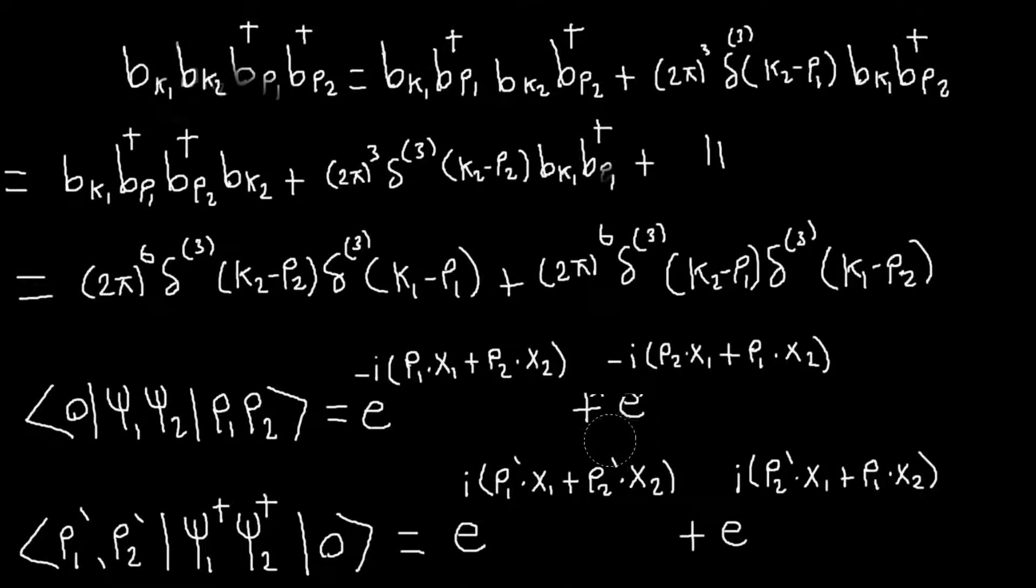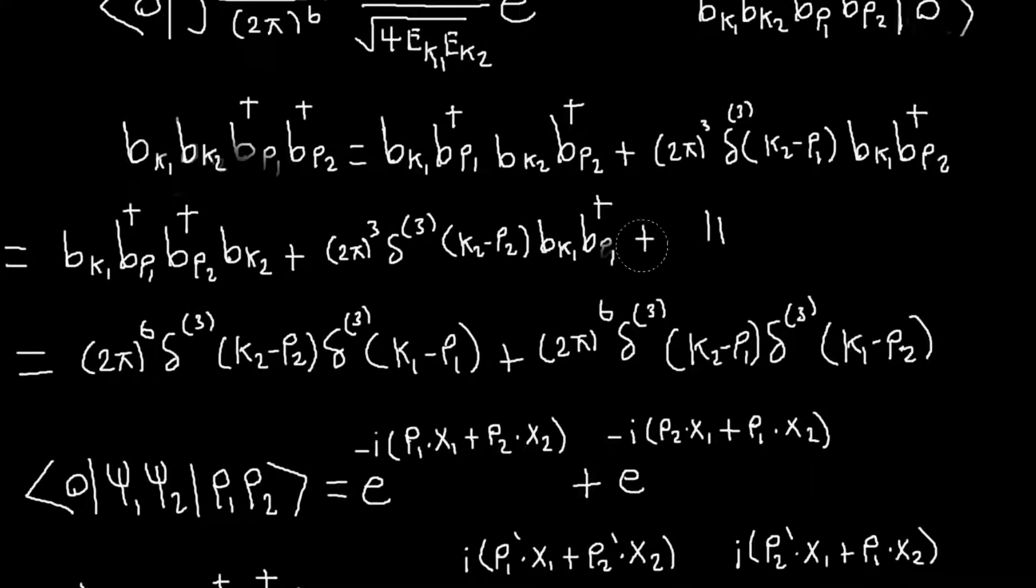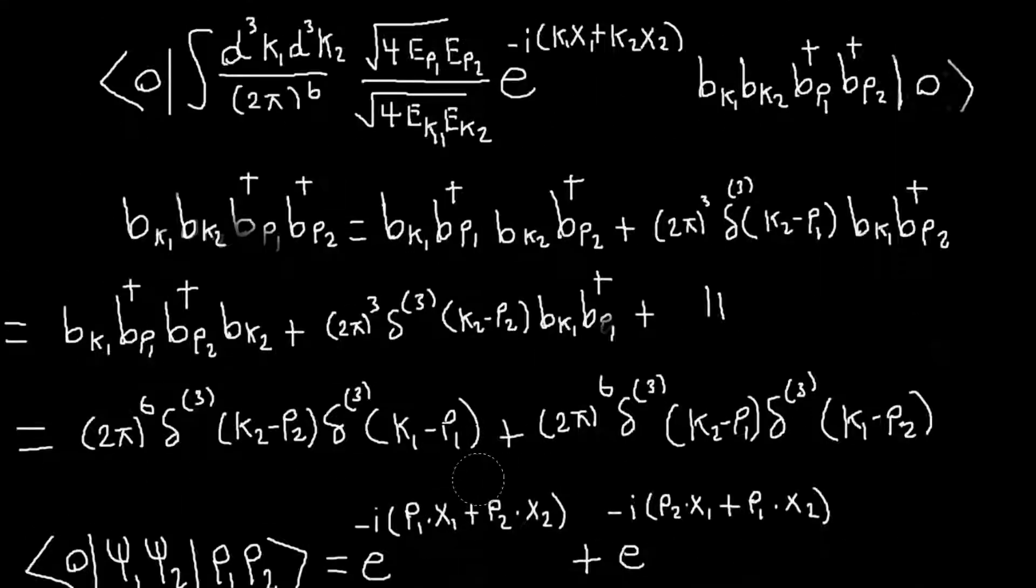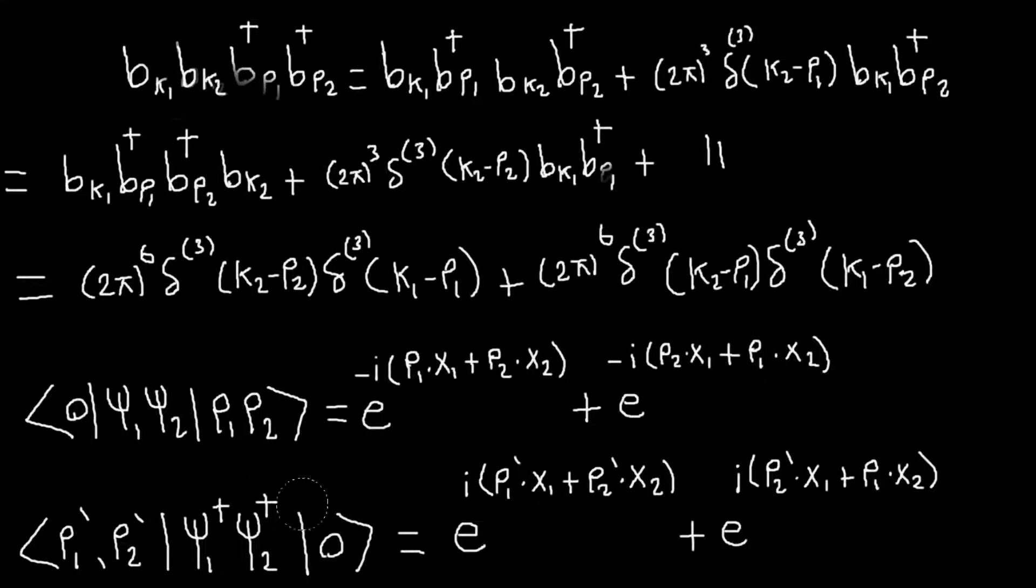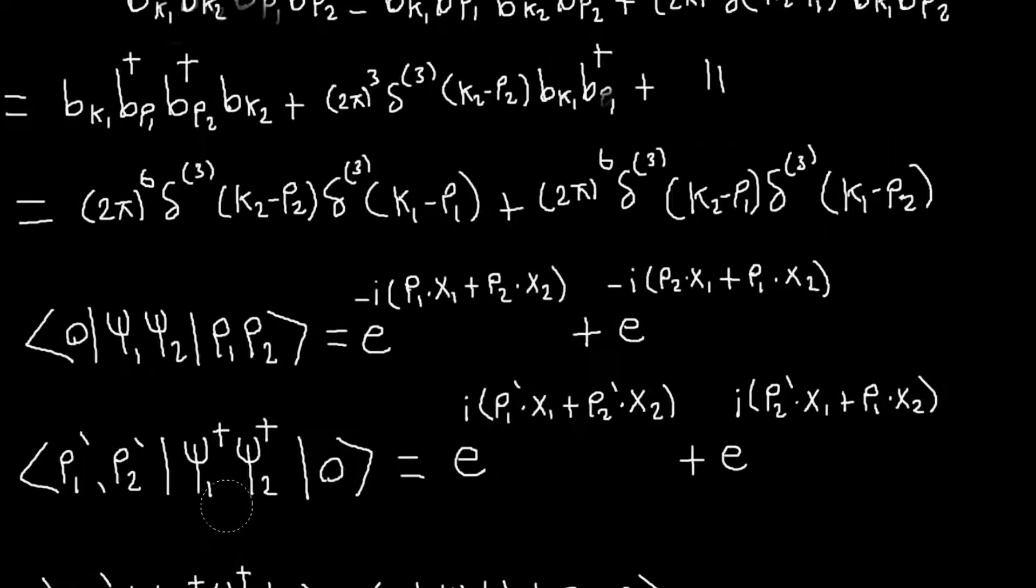And yeah, so you get what Tong gets, basically, in his notes, this kind of thing. And so once we have that, again, we can compute this other term that we needed, just by taking the complex conjugate, so basically, just these minus i's become i's, and I exchange p1 with p1 prime, and p2 with p2 prime.